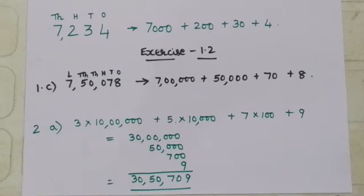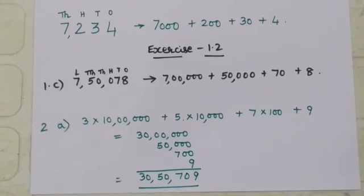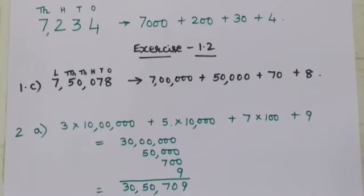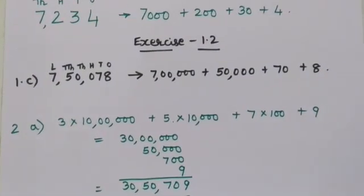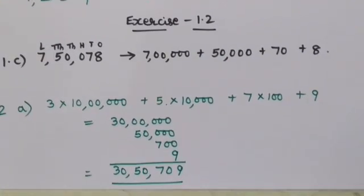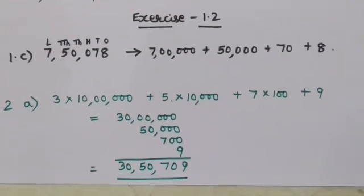Together, the numeral is 7234. Based on this, we are doing Exercise 1.2. Now, just look into question number 1. Write the following numerals in expanded notation.